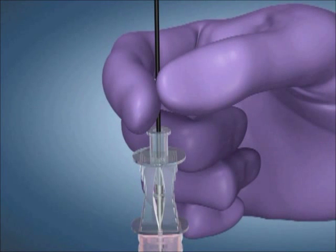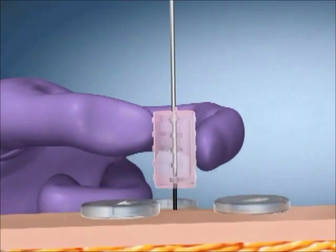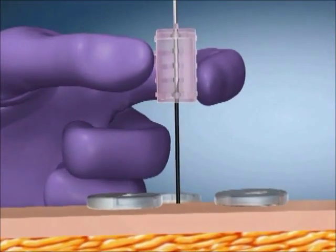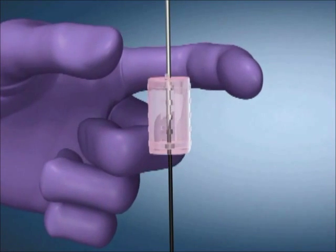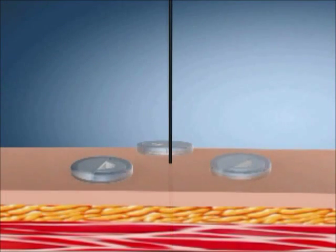Remove the safety introducer needle, keeping the J-guide wire in place, and activate the safety collar. Slide the introducer needle safety collar down to the needle shaft while removing the safety introducer needle to prevent inadvertent needle stick.